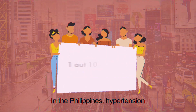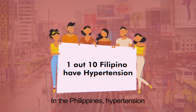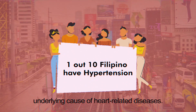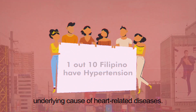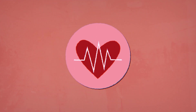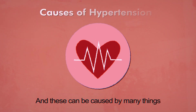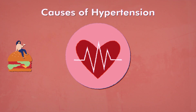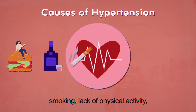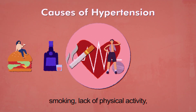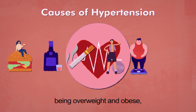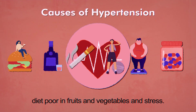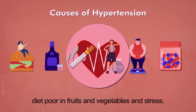In the Philippines, hypertension remains to be the number one underlying cause of heart-related diseases. And this can be caused by many things, such as a diet high in salt, drinking alcohol, smoking, the lack of physical activity, being overweight and obese, a diet poor in fruits and vegetables, and stress.